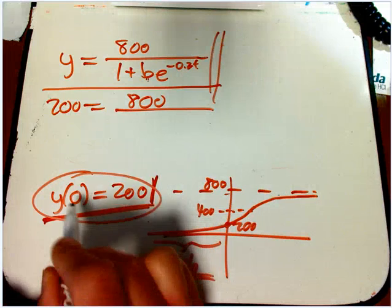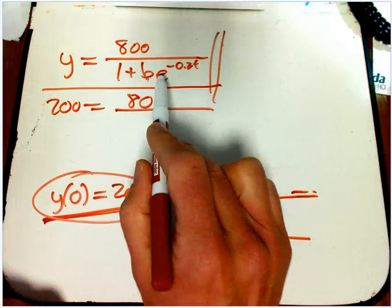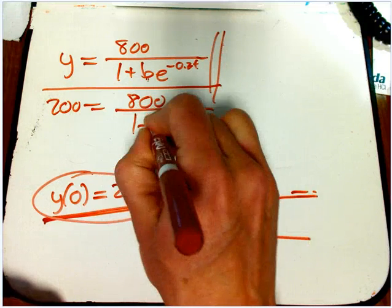Now, here, I made it a little easy on us. Because we're going to plug in T equals 0, this exponential, which, in principle, could be some kind of funky number, is going to go away.